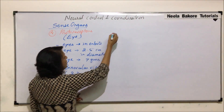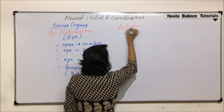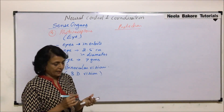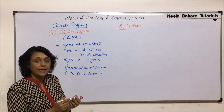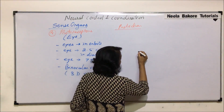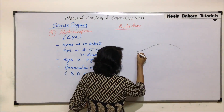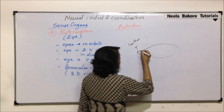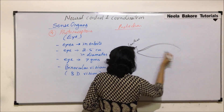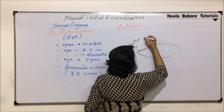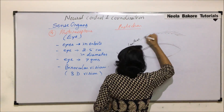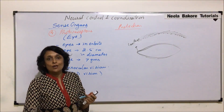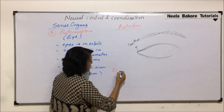Now let us talk about the protection of the eye. We have seen the location in the orbits and size and weight. Before we see the structures which protect, let us draw a simple structure of the eye. The area towards our nose is known as the canthus. We have the upper eyelid, lower eyelid, and the eyebrows present on the supra-orbital ridge. The first structure which protects our eyes is the eyebrows.